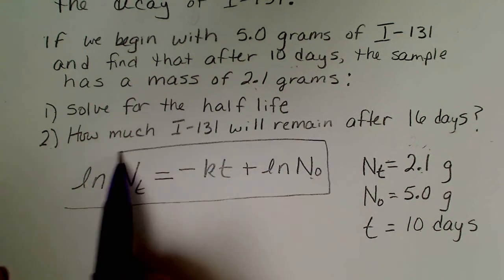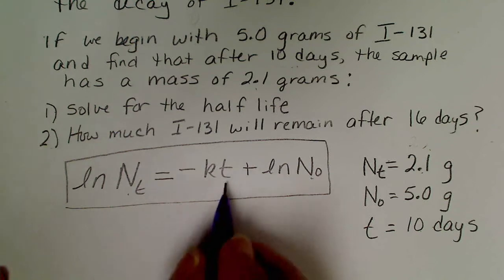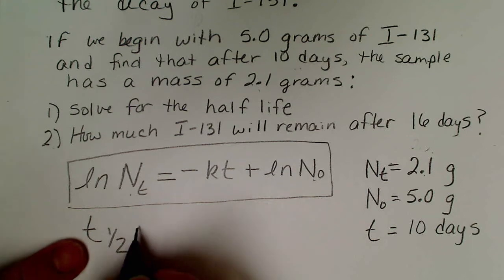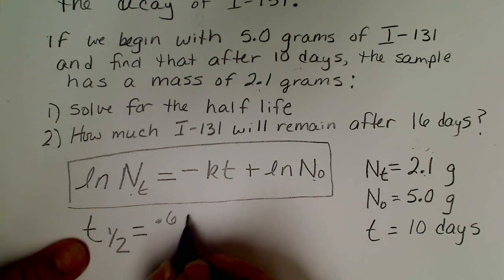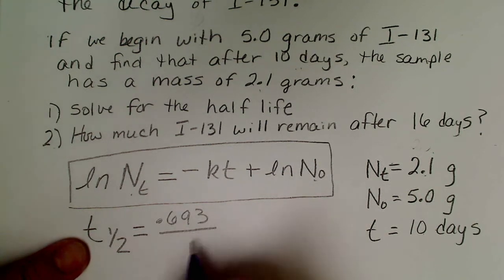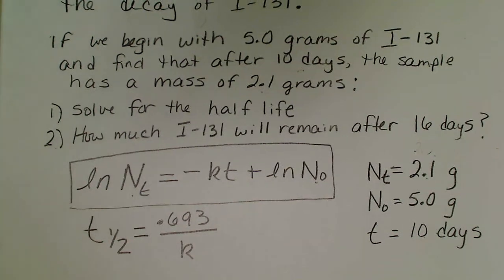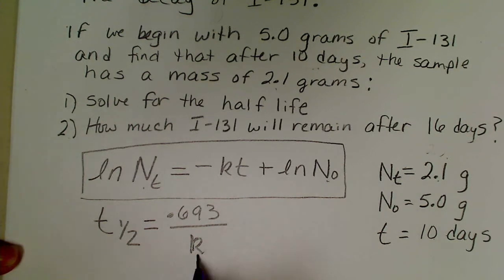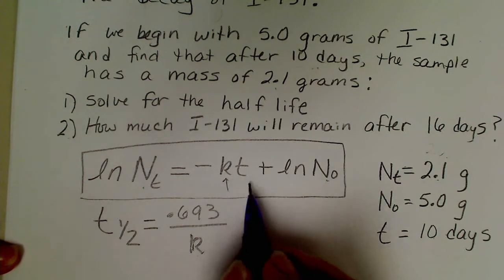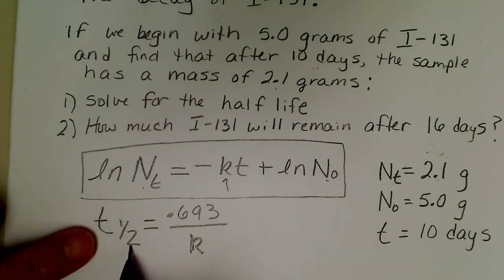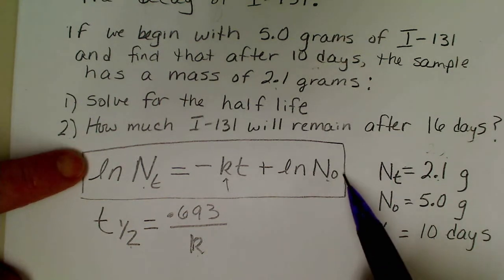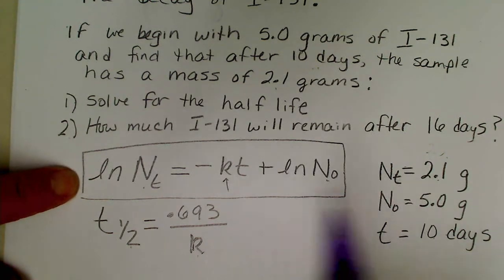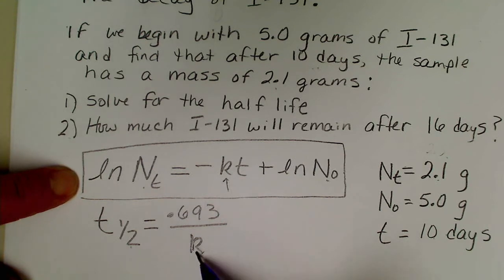We're asked to solve for t₁/₂. So t₁/₂ is 0.693 divided by k, and we're not given the rate constant k that we need to solve for the half-life.